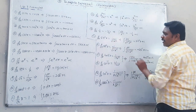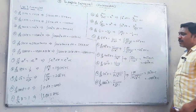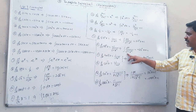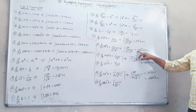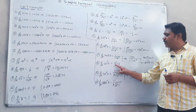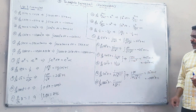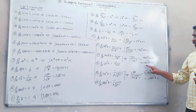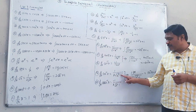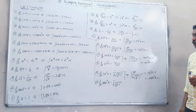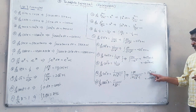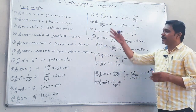Derivative of sin inverse x equals 1 upon root of 1 minus x squared, and derivative of cos inverse x equals minus 1 upon root of 1 minus x squared. So integral of dx upon root of 1 minus x squared equals sin inverse x plus c, and also equals minus cos inverse x plus c.